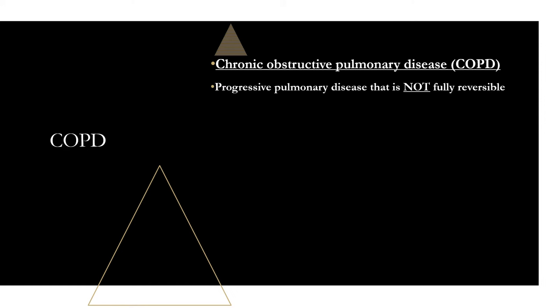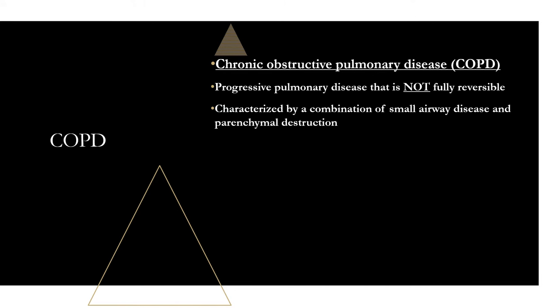COPD is chronic obstructive pulmonary disease. It's a progressive disease and the key is that it's not fully reversible, which differentiates it from asthma. It's characterized by a combination of small airway disease and parenchymal destruction. The structural changes we see in COPD — like narrowing of airway, destruction of alveoli — lead to airflow limitation and mucociliary dysfunction, which we'll see in chronic bronchitis, and a number of clinical manifestations we'll go over in a few minutes.